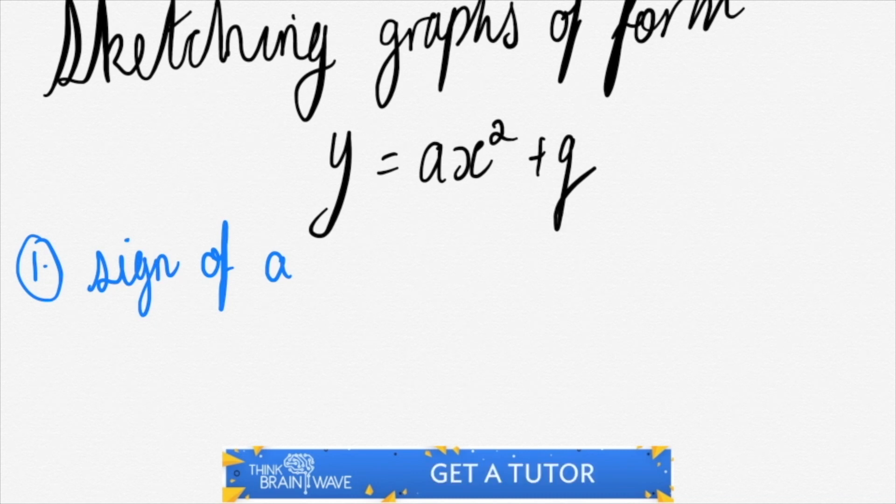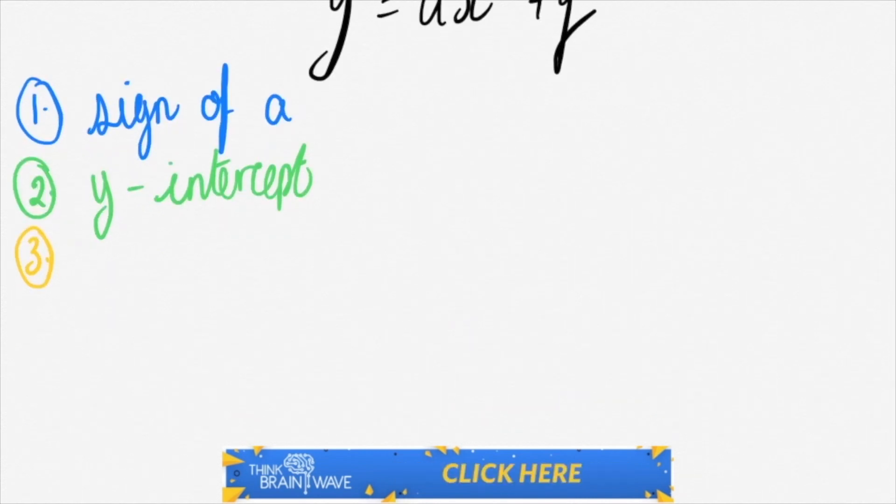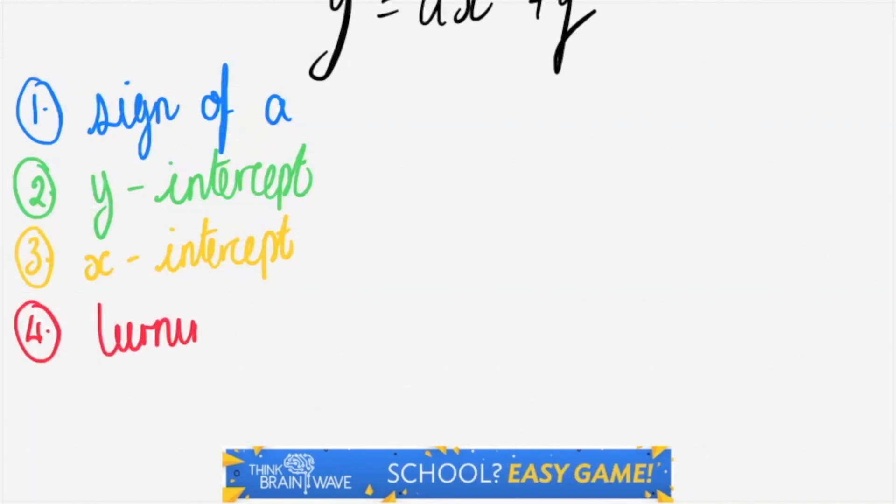So first things first, we need to look for the sign of a. If a is positive then the shape is like a smiley face. If it's negative it's like a frowning face. So our first step is sign. Then we need to find the intercepts, both y and x. And then we need to look at the shift which is q as well as the turning points.